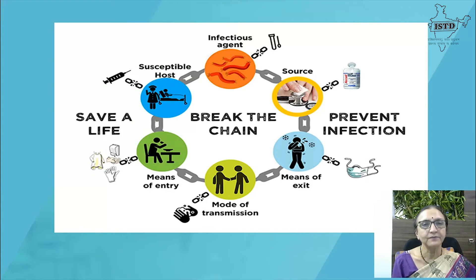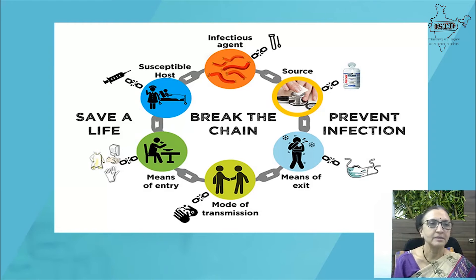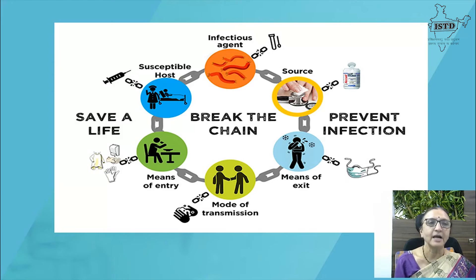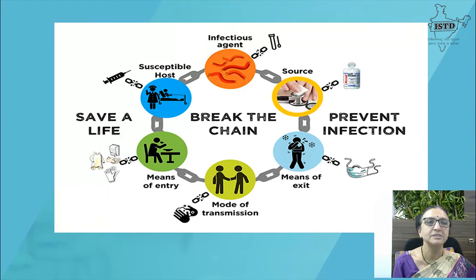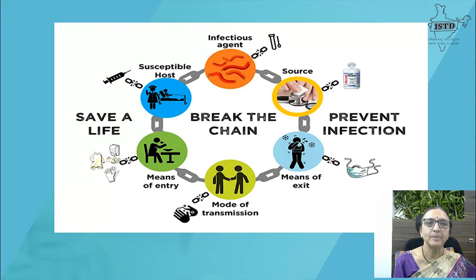Even if we take all these precautions, infection can still be transmitted through food, so we should practice healthy food hygiene. If a person develops symptoms, seeking early medical help is key to preventing the disease. And lastly, taking vaccines is very important. By all these means we can break the chain.